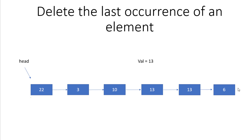The first case is when the value doesn't exist in the linked list. We use a temp variable to store the reference wherever the value is found. If at the end temp is still null, it means the element doesn't exist, so we simply return the same head node.